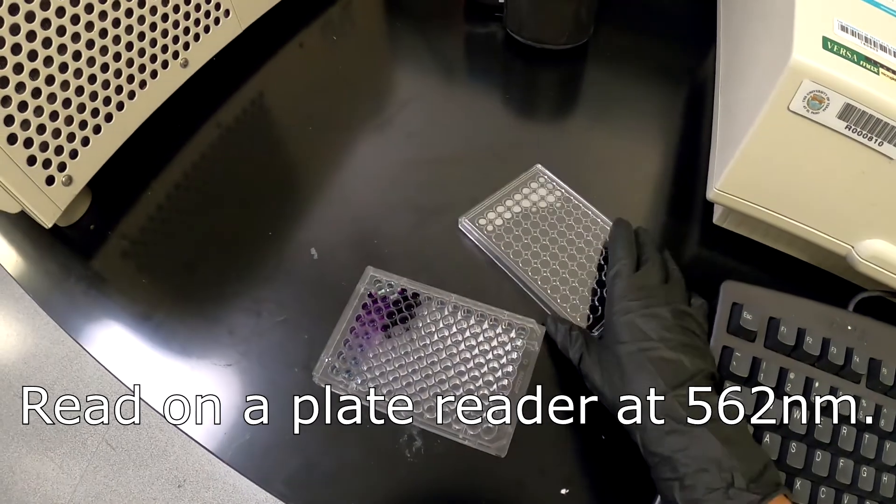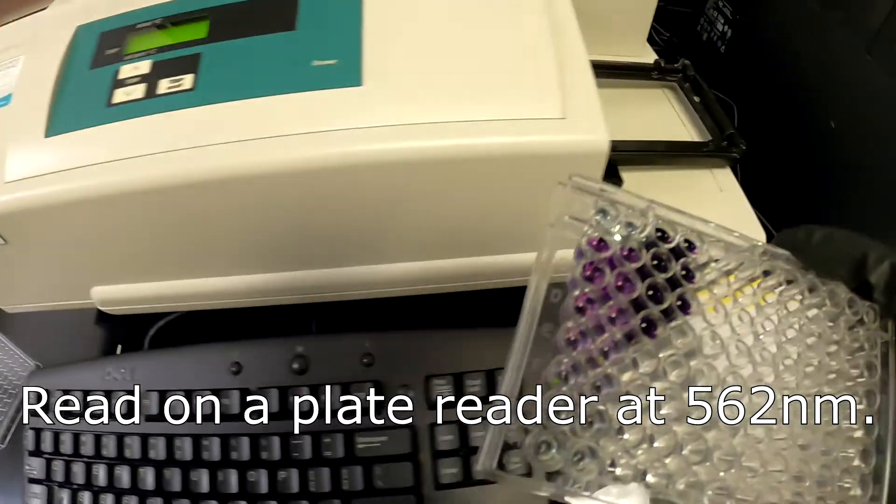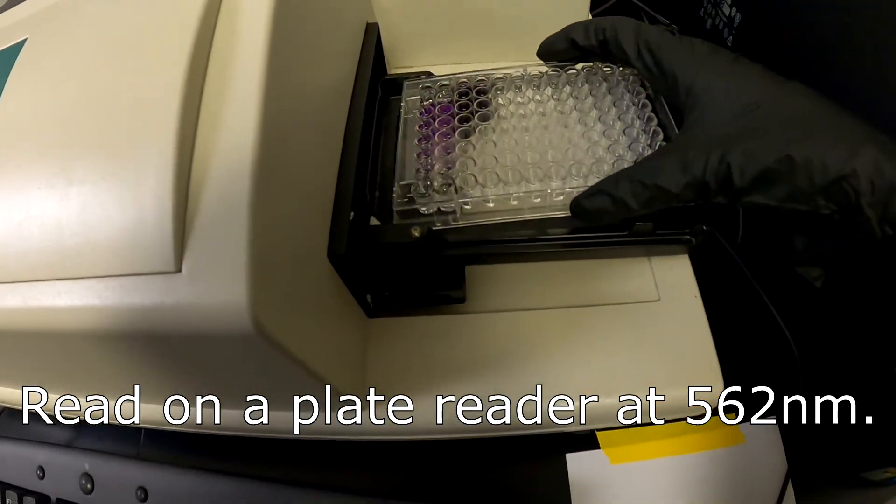The plate was then covered and incubated at 37 degrees Celsius for 30 minutes in order to allow the reaction between copper and BCA to occur. Incubating the BCA assay at higher temperatures is recommended as a way to increase assay sensitivity while minimizing the variances caused by unequal amino acid composition. The plate was then read on a spectrophotometer at a wavelength of 562 nanometers.